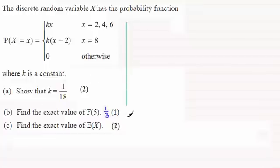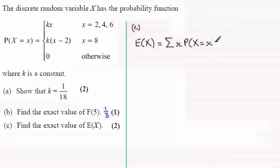So in order to find E of X, the expected value of X, or some people call it the mean, what we need to be familiar with is this result here: that E of X for a discrete random variable is going to be the sum of the observed values times the probability of that observed value.